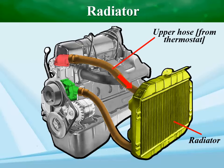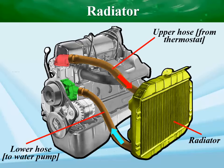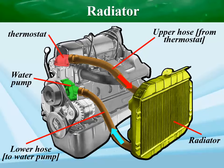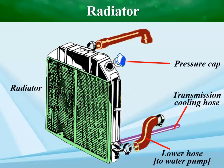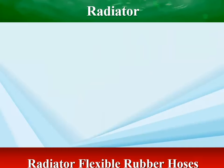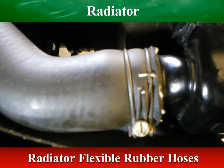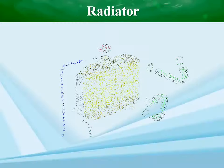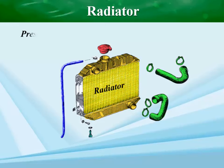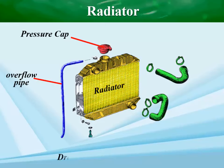The radiator is connected to the engine by flexible rubber hoses, which are held in place by metal clips to form a watertight seal. A removable pressure cap, overflow pipe, and drain tap or plug must also be fitted to the radiator.